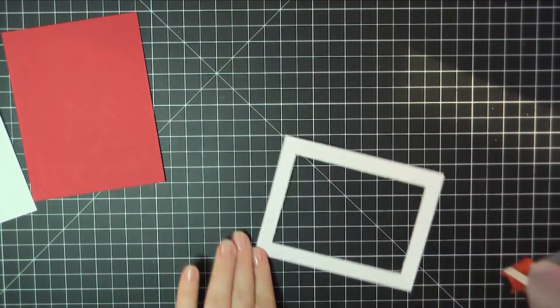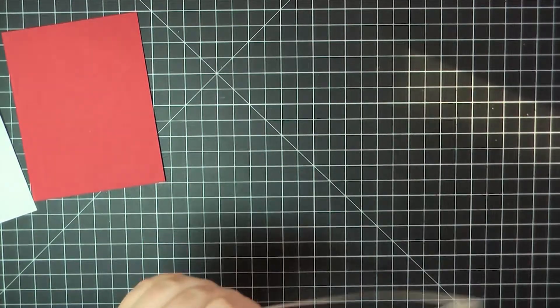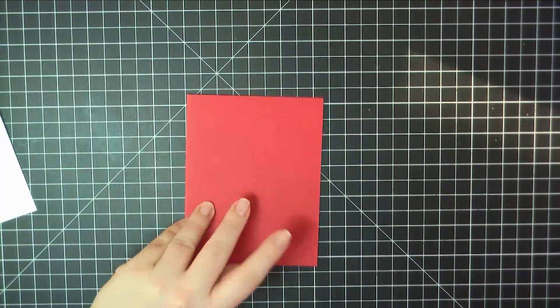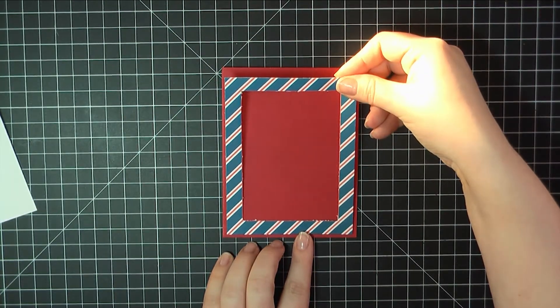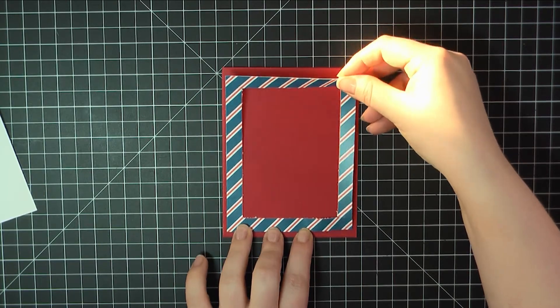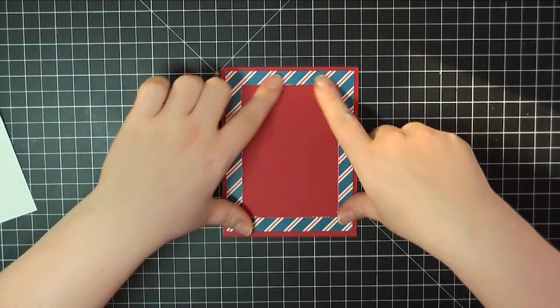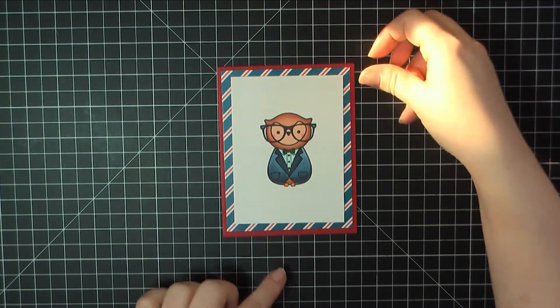So here off camera, you'll see that I went ahead and trimmed out the center of that paper. You weren't going to see it anyway, so I figured I might as well save it in case I might be able to use it on another card someday. And using my ATG gun, I'm just going to center that on top of an A2 size card base. And this card base is made from My Favorite Things card stock in the color wild cherry.